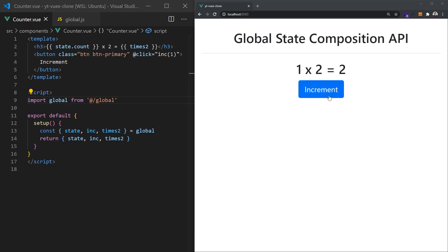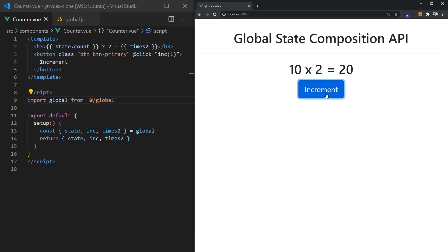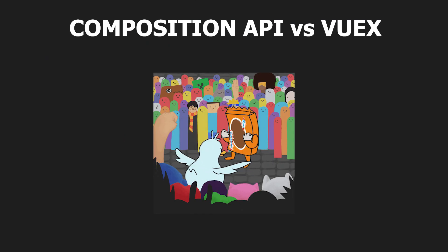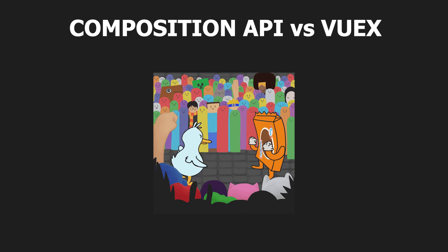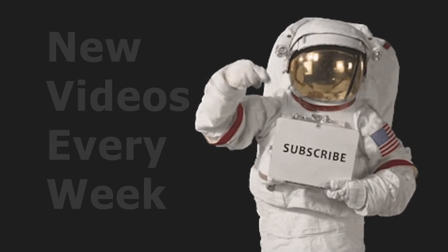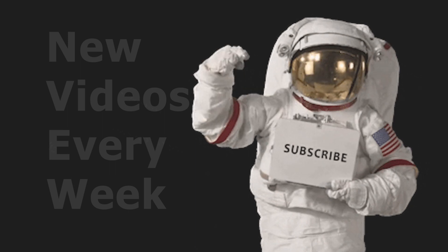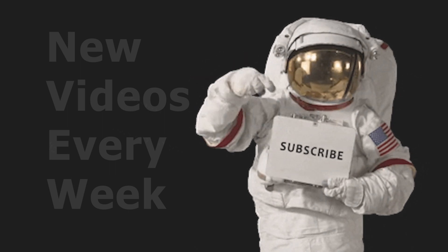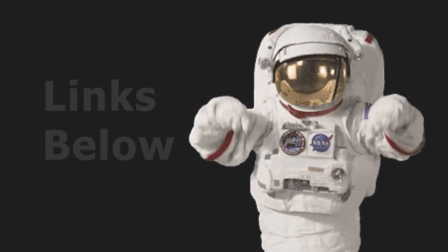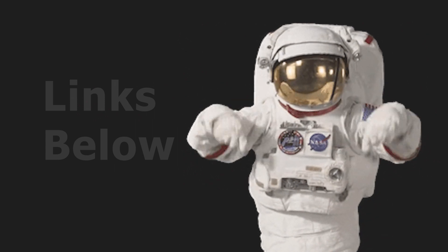Today, we're going to be using the Composition API to create our own state management store similar to Vuex. Then at the end of the video, we'll compare the difference between the two solutions and determine which one you should use in your application. If you're new around here, don't forget to subscribe and check out some of my other Vue.js videos. You can grab the link to the full source code in the description below.